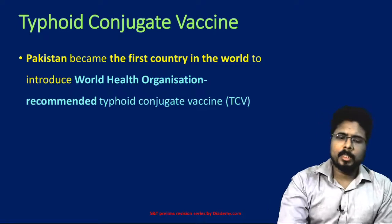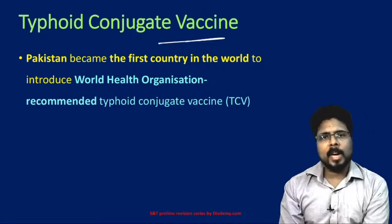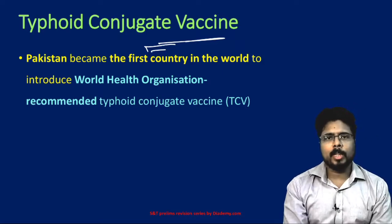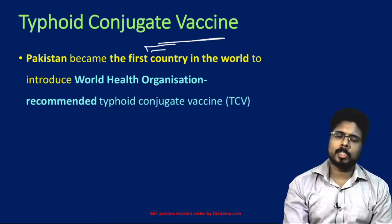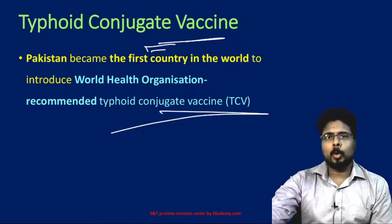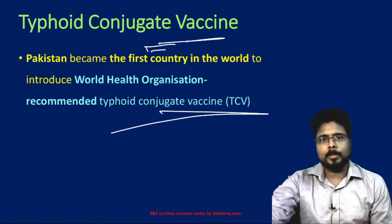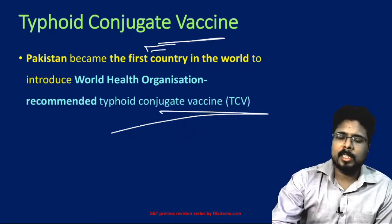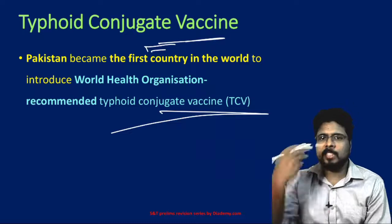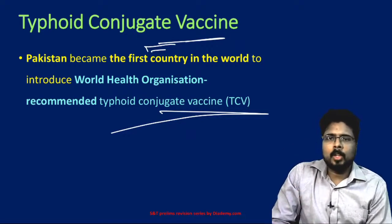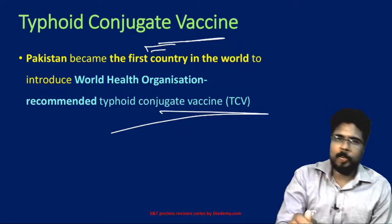Pakistan has recently become the first country in the world to introduce the WHO-recommended Typhoid Conjugate Vaccine, or TCV. Stage 3 trials are still ongoing, but Pakistan adopted it anyway, becoming the first country to do so. This vaccine is intended to prevent typhoid fever.